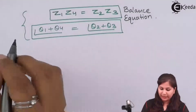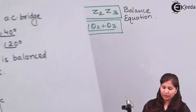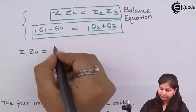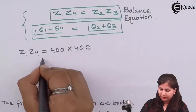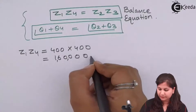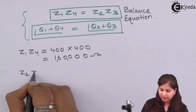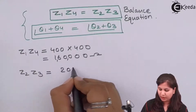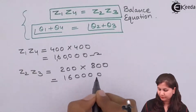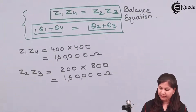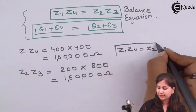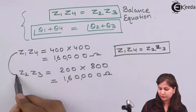First, we find Z1 × Z4. Z1 is 400 ohms and Z4 is 400 ohms, so 400 × 400 = 160,000 ohms. Next, Z2 × Z3: Z2 is 200 ohms and Z3 is 800 ohms, giving 200 × 800 = 160,000 ohms. So the first equation Z1·Z4 = Z2·Z3 is satisfied, as both products are equal.